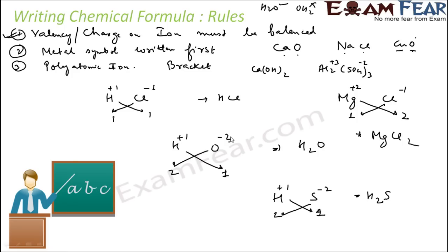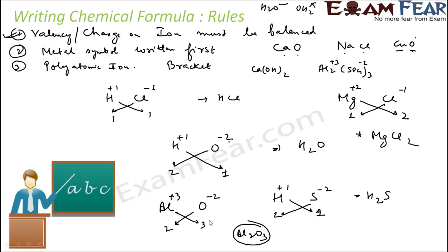Another good example is aluminium oxide: aluminium has charge +3, oxygen has charge −2. Cross them over — put 2 with Al and 3 with O — to get Al2O3. The charge is balanced: on the aluminium side +3 × 2 = +6, and on the oxygen side −2 × 3 = −6, giving an overall charge of zero.